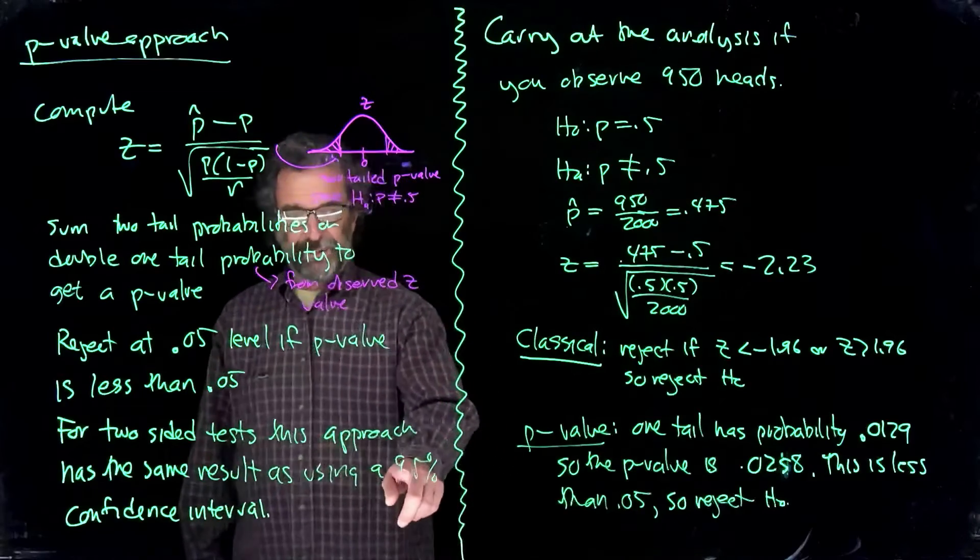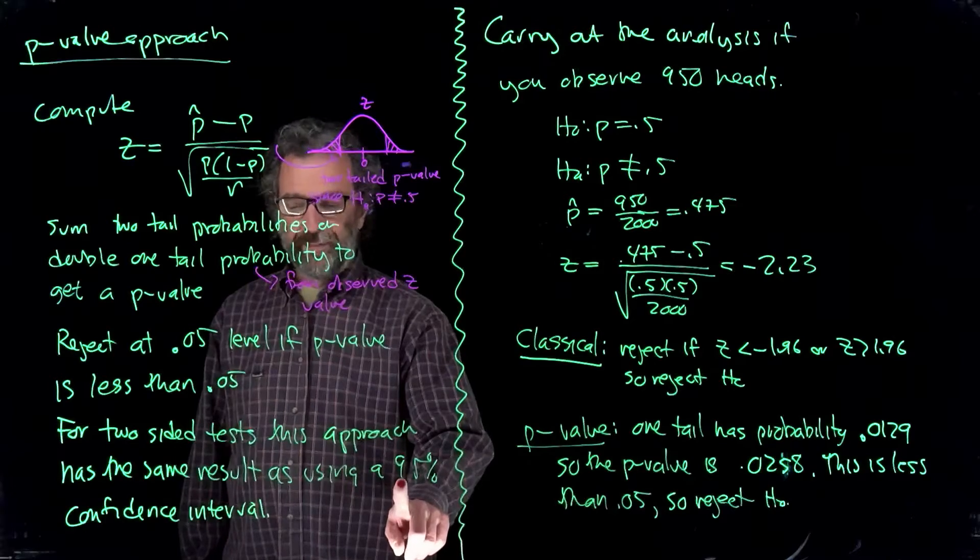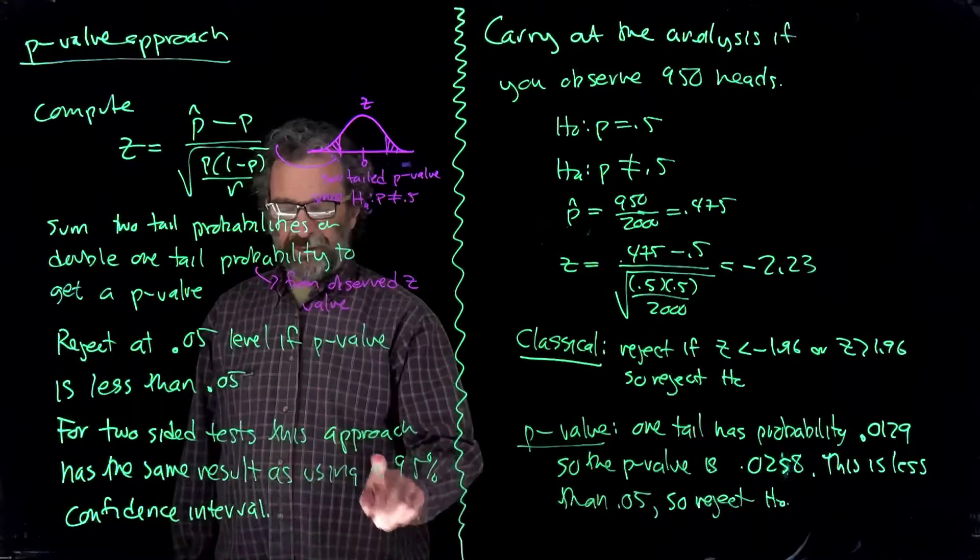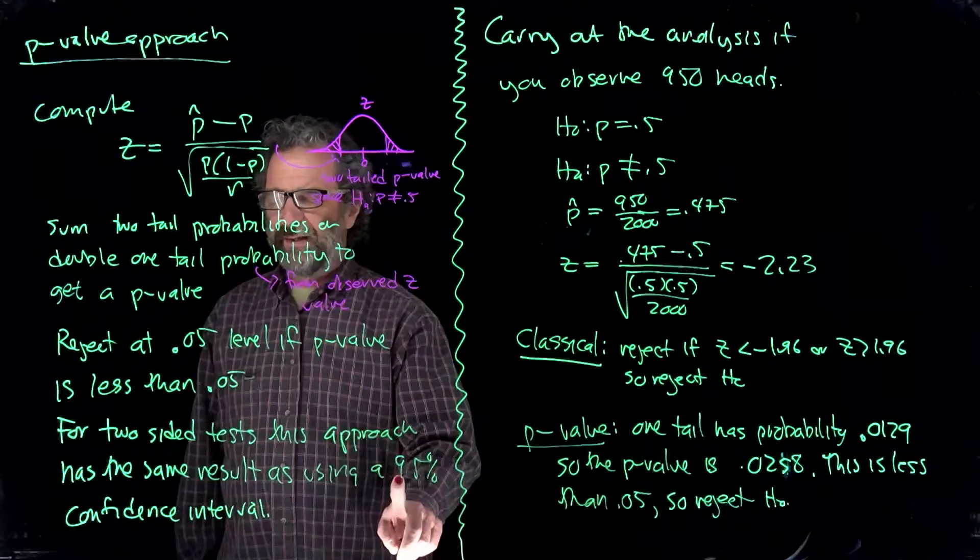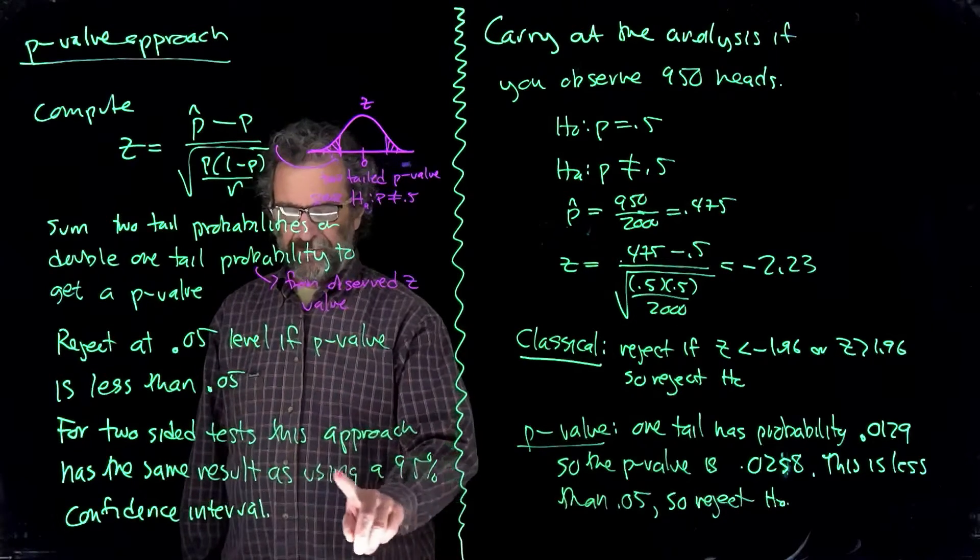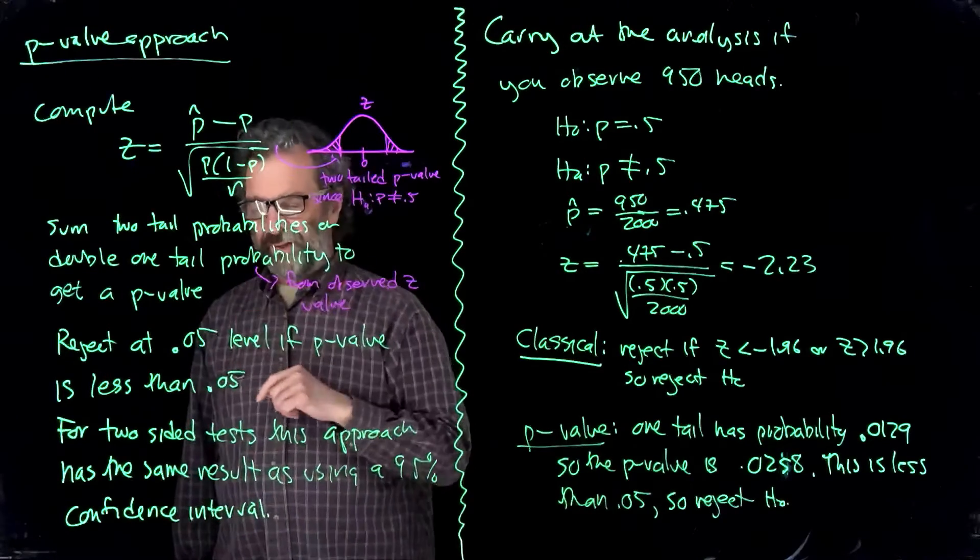So if we computed a 95% confidence interval and one-half fell in the interval, which is the null hypothesis value, then we would not reject. And if the 95% confidence interval does not contain one-half, we would reject. That way of testing and the p-value approach for testing with two-sided tests are identical.